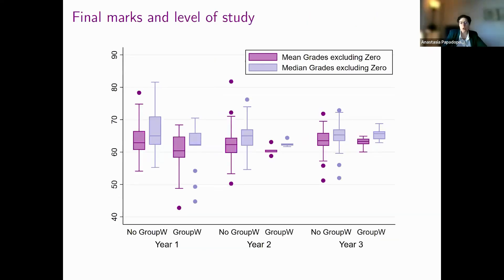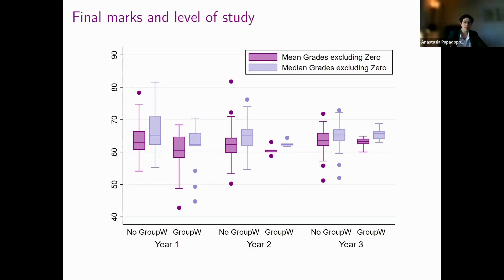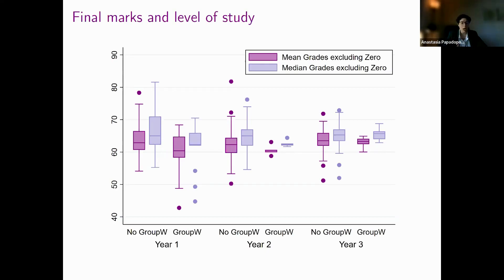If we also compare the courses by level of study — first year, second year, and third year — what we see is that the courses in the first year and second year follow more or less the same pattern: the average with group work is lower. However, for the third year, we see that these differences are not that pronounced. The median average and the median grade for the third year courses are more or less the same with and without group work.